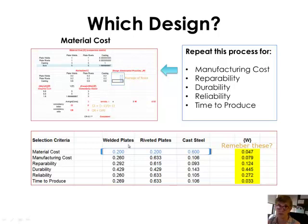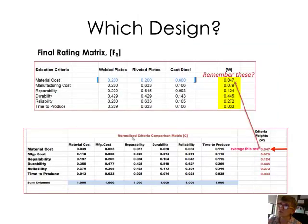And so this is what's called the final rating matrix, the F sub R matrix, but I'm not quite through there. I have to transpose it. And again, as a reminder, there are the weightings that we got from the first part of this analysis, where we were looking at all the different criteria. Now we're trying to decide which of these designs is the best for us.